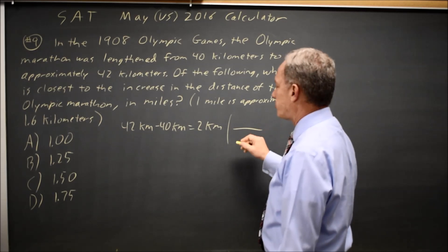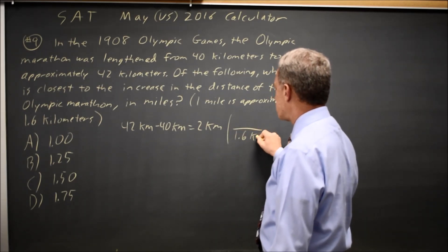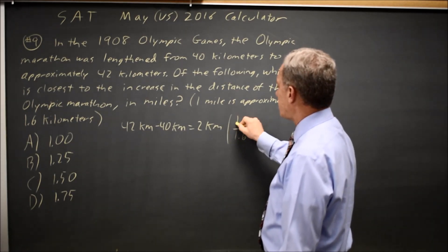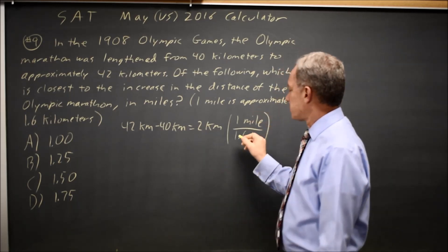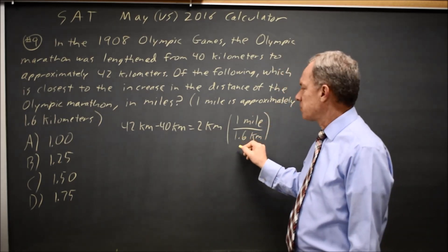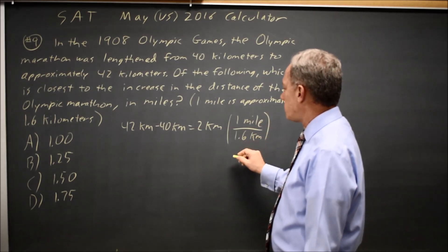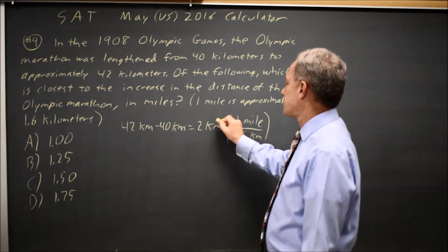So I'm going to multiply by a fraction equal to 1. I want my 1.6 kilometers in the denominator to cancel with kilometers I already have. And 1 mile will go in the numerator because 1 mile is equal to 1.6 kilometers approximately. So 1 mile over 1.6 kilometers is 1. And if I multiply by 1 I haven't changed my expression. Let's cancel the kilometers.